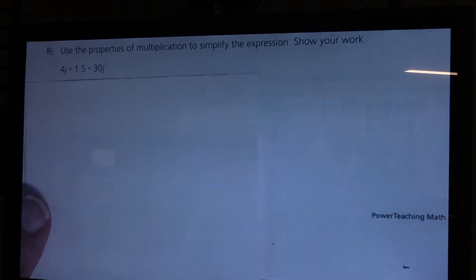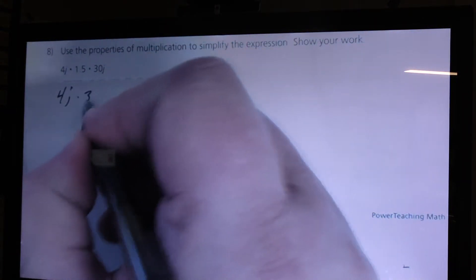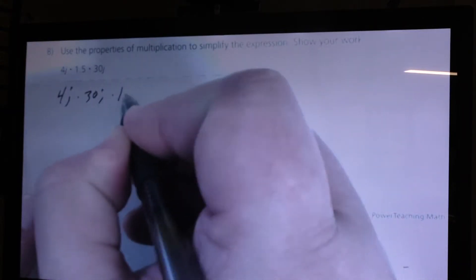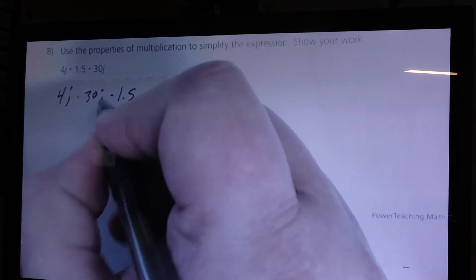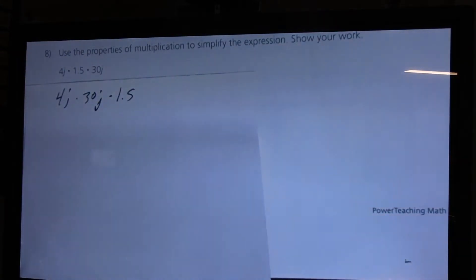Now, the very first thing that I want to do is I want to move some of those around just to make it easier for me to solve. So, if I move 4j times 30j times 1.5, or 1½, I'm not changing the product at all. The product will be the same as if I started out 4j times 1½, then times 30j. But, sometimes it's easier to do a lot of these steps mentally. I am showing my work, but I'm going to do a bunch of it mentally, if I use a property that allows me to move those factors around.